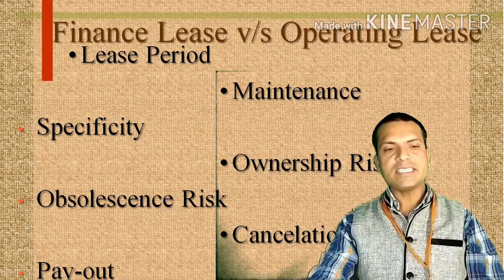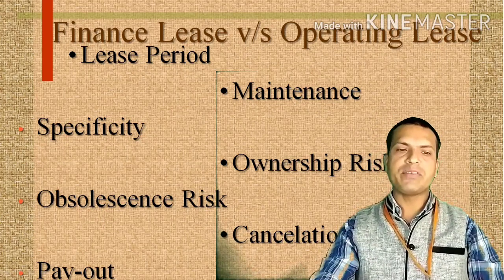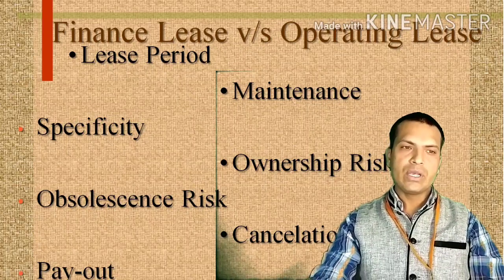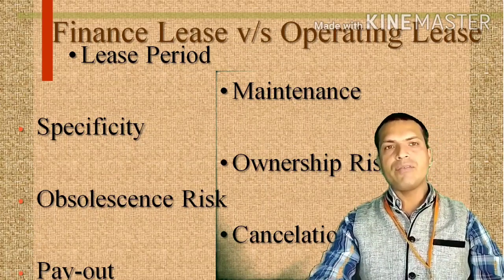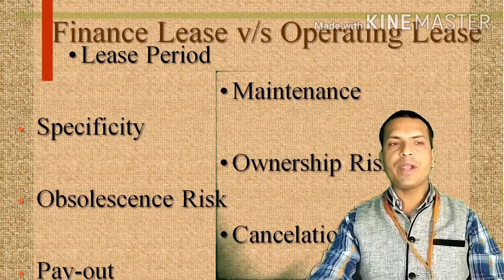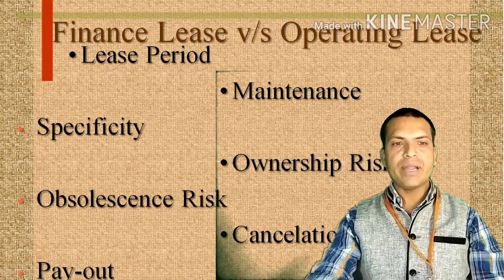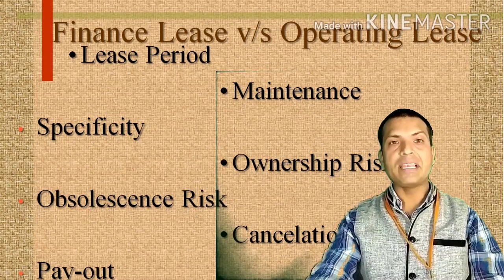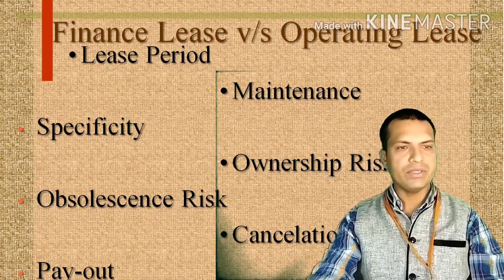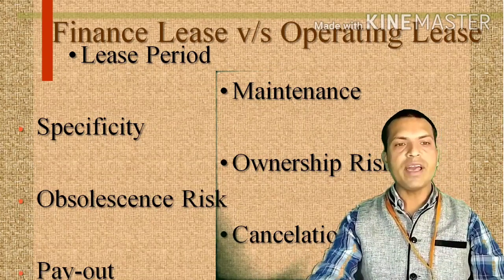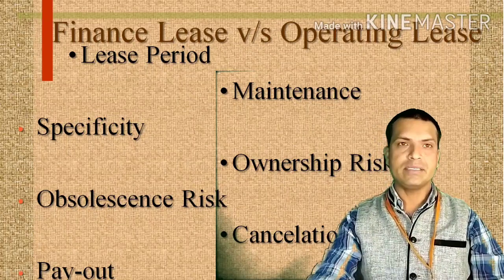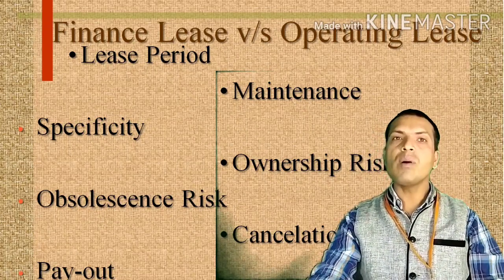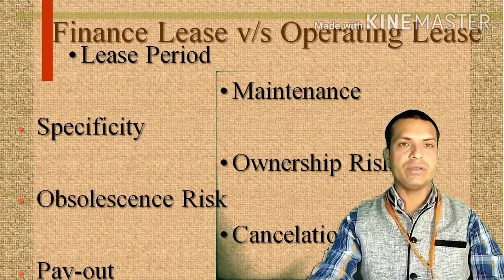Let's understand the difference between financial lease and operating lease. First point is lease period: financial lease is a long-term lease, whereas operating lease is a short-term lease. Maintenance in a finance lease is borne by the lessee because it is long-term, and maintenance of an operating lease is borne by the lessor.